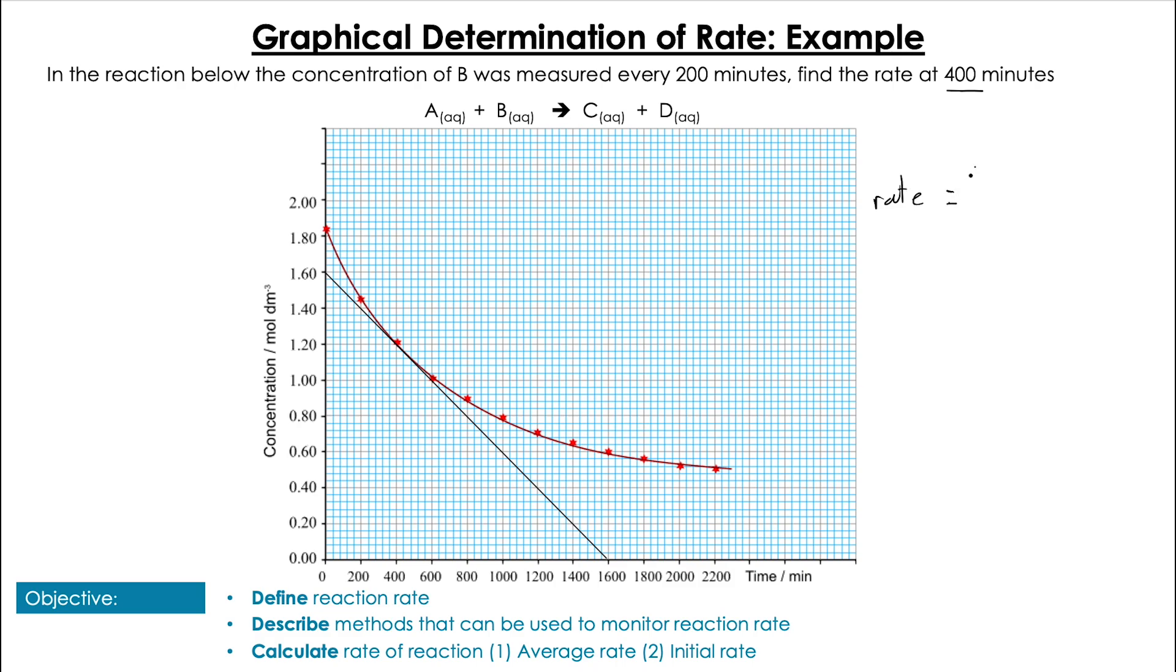Then we're going to find the gradient of that line, which is the change in concentration on the y-axis divided by the change in time on the x-axis. At 400 minutes, the rate is going to be equal to 1.6 divided by 1600, which is 1 times 10 to the minus 3 moles per decimeter cubed per minute.